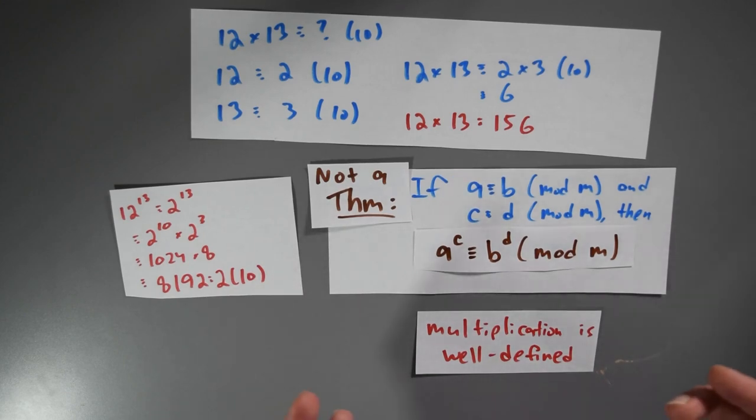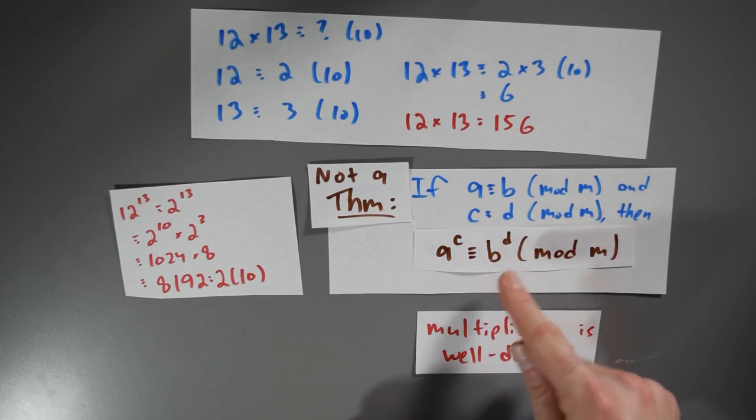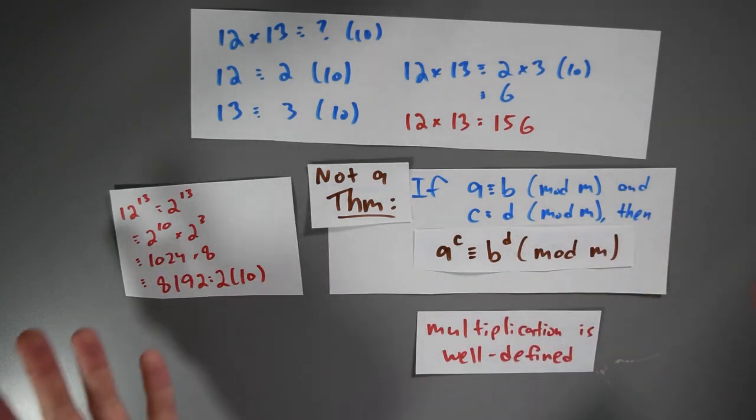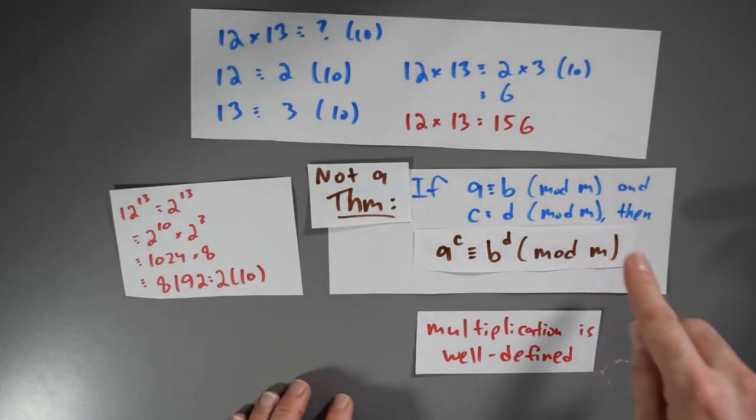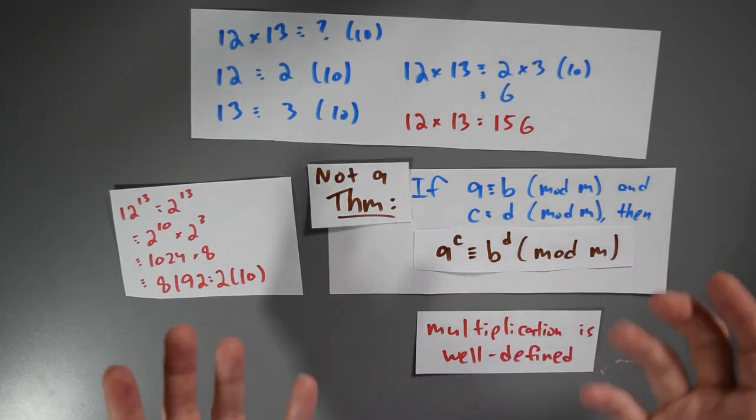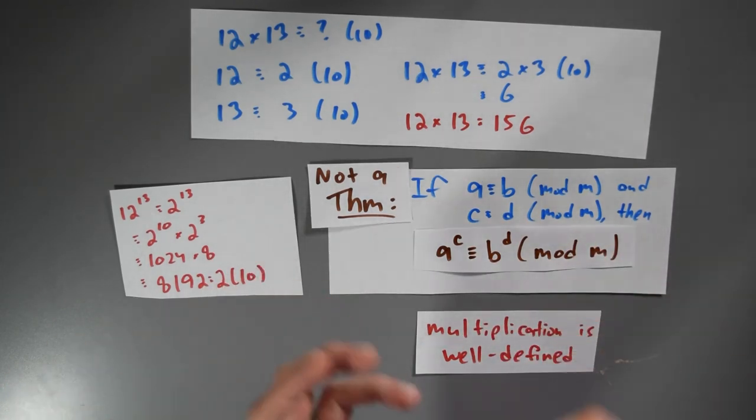And of course, it doesn't mean that you can't find examples where a to the c is congruent to b to the d mod m. That might happen accidentally. But in general, this statement doesn't hold. And consequently, exponentiation is not a well defined operation.